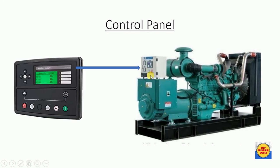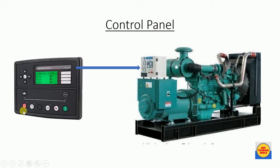Next is the control panel. With the help of the control panel we can monitor diesel engine and alternator parameters such as line-to-line voltage, phase voltage, phase currents, frequency, and diesel engine RPM. We can also start and stop the DG from here.